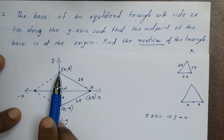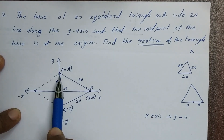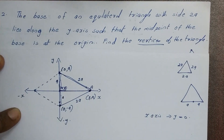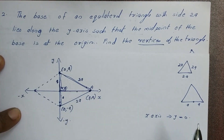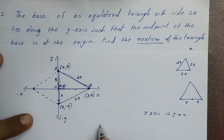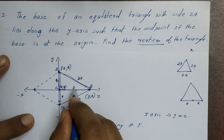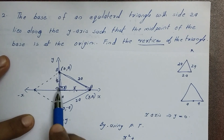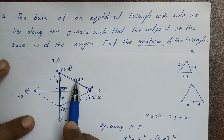One side of the equilateral triangle is 2a. Consider the right angle triangle formed by cutting this triangle. The third side x can be found using the Pythagorean theorem. By using the Pythagorean theorem, x squared plus a squared equals 2a squared — that is, base squared plus perpendicular squared equals hypotenuse squared.